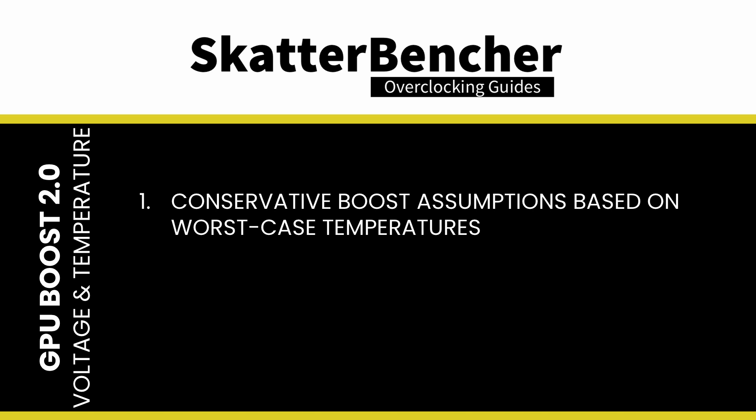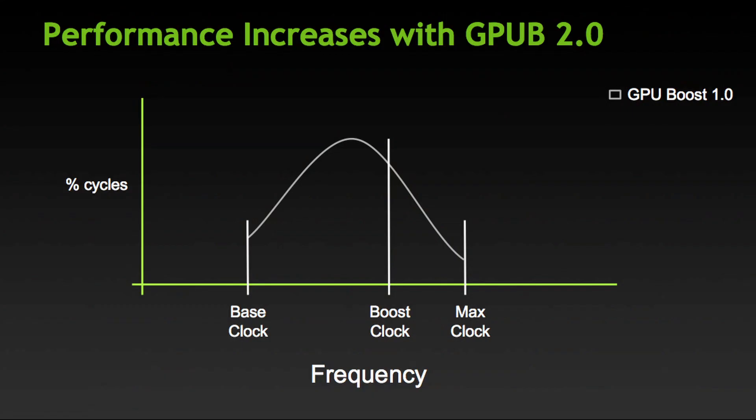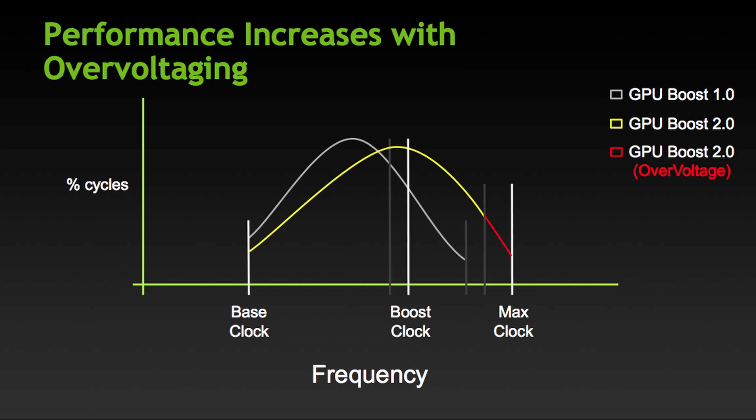Including temperature in the GPU Boost algorithm makes sense from both performance and semiconductor reliability perspectives. Semiconductor reliability is strongly correlated with operating temperature and voltage — for a given frequency, you need a higher voltage to maintain reliability at a higher temperature. Alternatively, at a lower temperature you can use a lower voltage and retain reliability. With GPU Boost 2.0, Nvidia better maps the relationship between voltage, temperature, and reliability, aiming to prevent high voltage combined with high operating temperature. That enables Nvidia to allow higher operating voltages both at stock and as over-voltage options for enthusiasts.